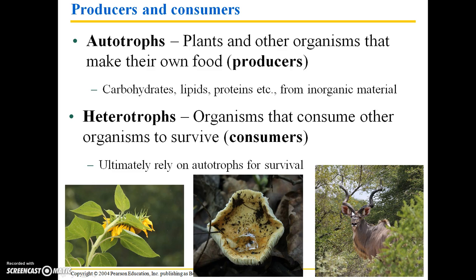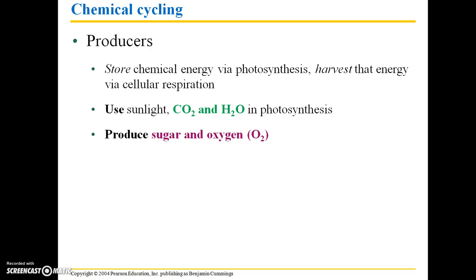There are herbivores that make up the primary consumers of the food chain, and then there are carnivores that will consume those herbivores. But ultimately, you can trace most food chains back to the primary producers, which are typically plants. Producers are essential for being able to store chemical energy via photosynthesis. They basically are able to capture chemical energy from the sun by photosynthetic processes, and that is the basis of most food chains as we know them.